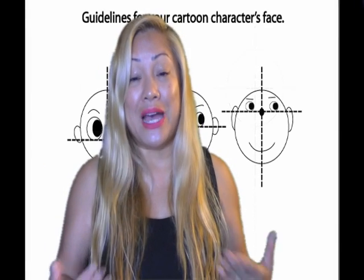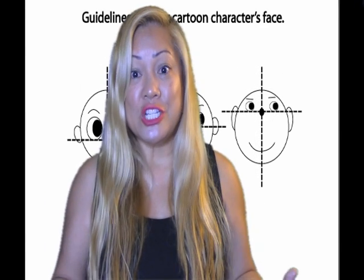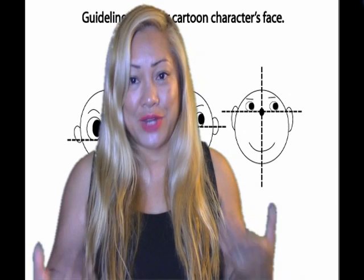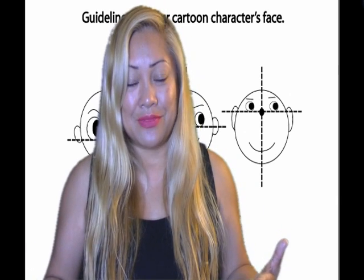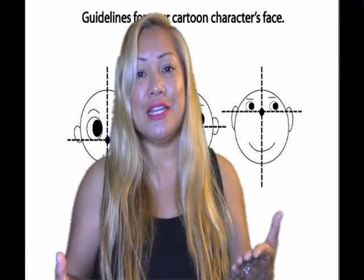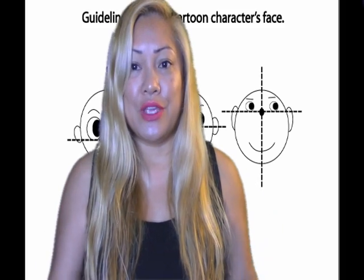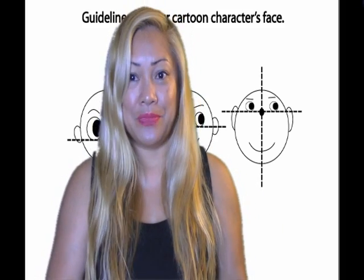You're going to create a cartoon character using a simple circle and a line going right down it. These guidelines are going to help you balance and create proportion and direction. They're going to guide you to create your cartoon character on paper. You're going to need paper, pencil, and a great eraser. You're going to erase and perfect — this is your rough draft.